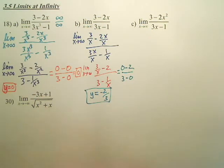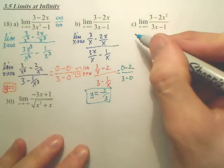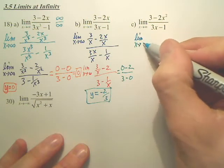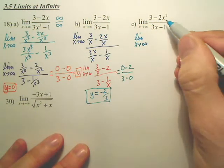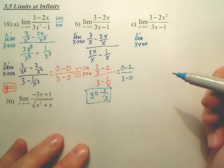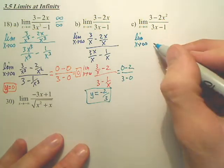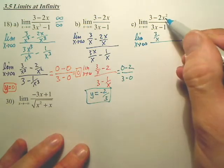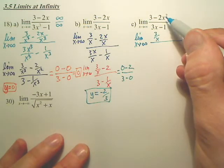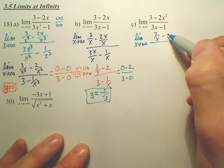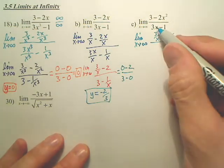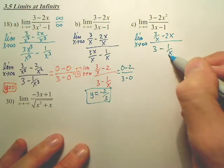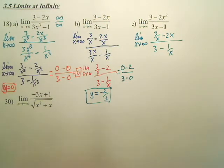For the last one, what are we going to divide everything by? x. When you divide by x, that's 3 over x. When you divide 2x by x, what do we get? 2x. And then here you get 3, and then 1 over x. Just skip the steps and write it quickly.